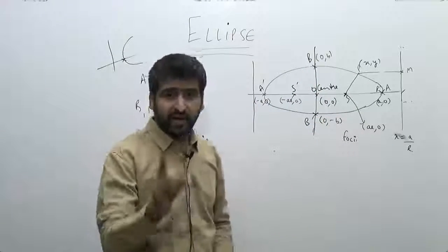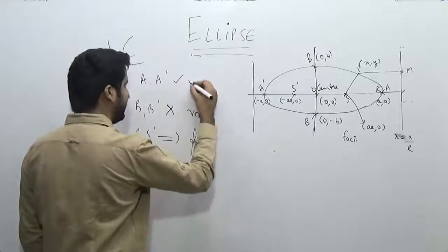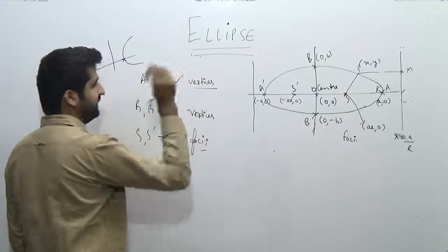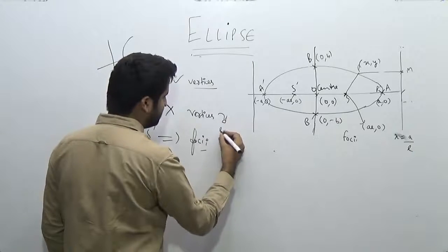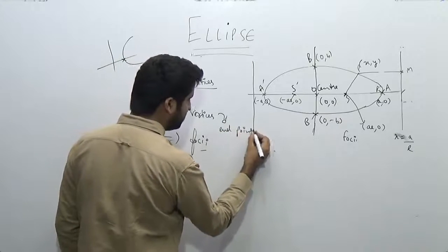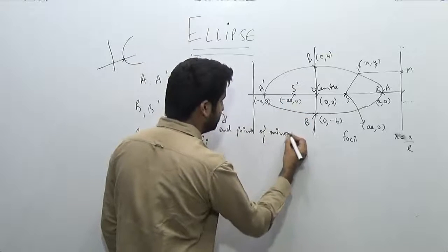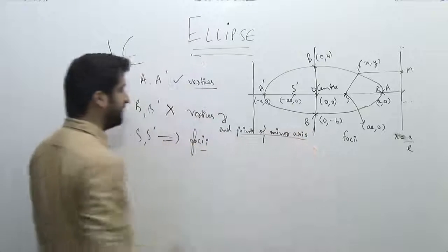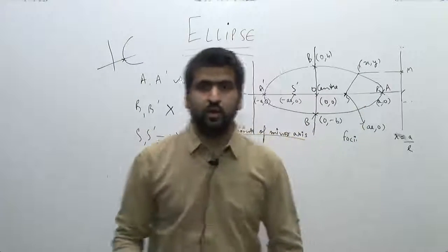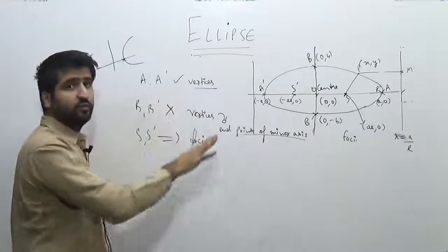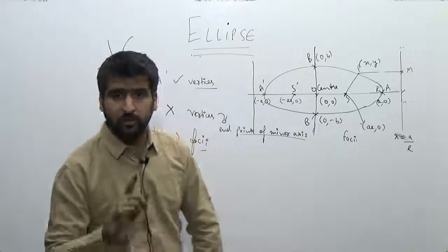However, B and B dash are not the vertices. A and A dash are the only vertices of the ellipse. B and B dash are just the endpoints of the minor axis — the smaller axis is the minor axis. So if someone tells you to find all the vertices of this ellipse, you just write down the two endpoints of the major axis, not the endpoints of the minor axis. That's an important thing to remember.